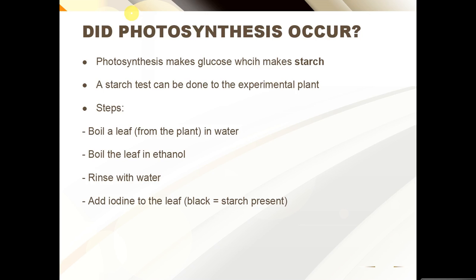It's not a matter of just dropping iodine drops onto the leaf — there are certain steps you need to follow. First, you take the leaf and boil it in water to make the leaf permeable; otherwise the iodine solution won't sink through and you won't get any results. Then you boil the leaf in ethanol, which dissolves chlorophyll, making it easier to distinguish positive and negative test results. You then rinse it with water, and finally add iodine solution to the leaf. If it turns from a yellowish-brownish color to black, that means starch is present.